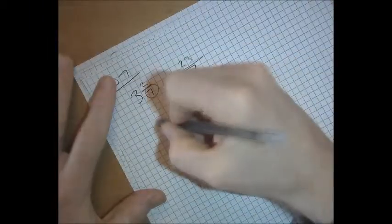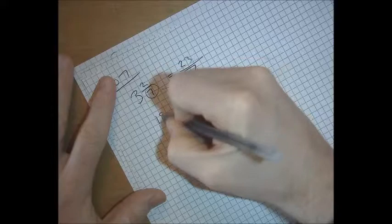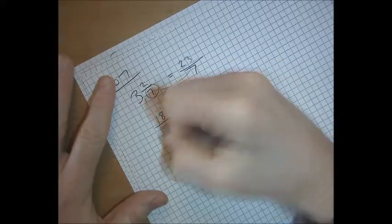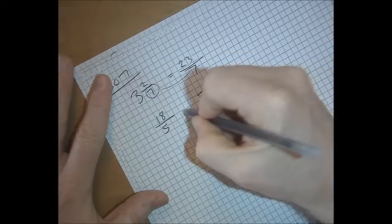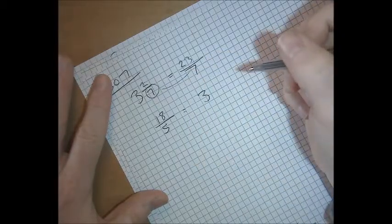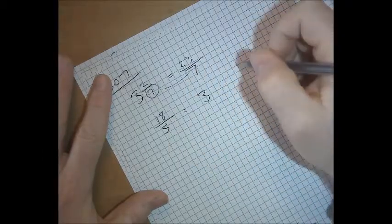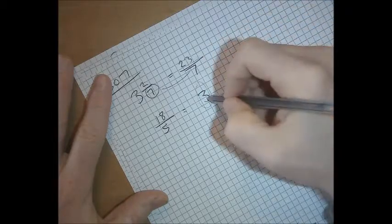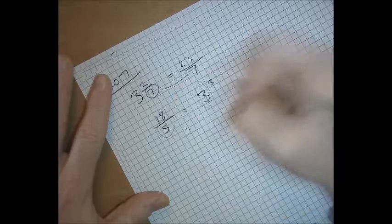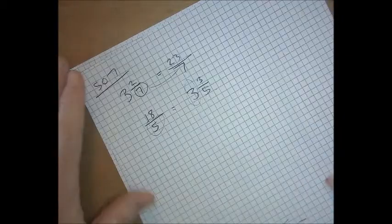And if you have an improper fraction, you go that divided by that. There's room for 3 fives in an 18 with 3 left over. So the answer you get to the division goes there, the remainder goes there, and the denominator gets copied across.